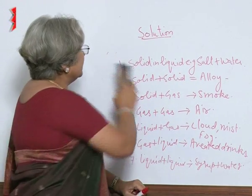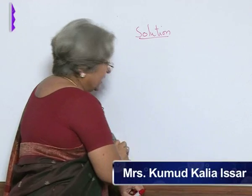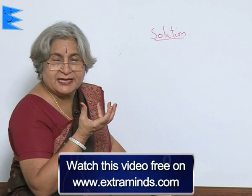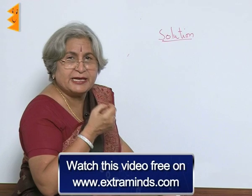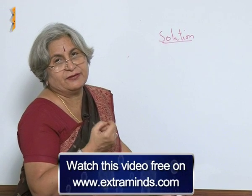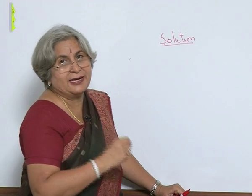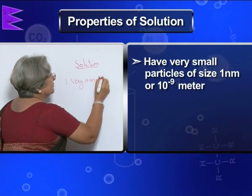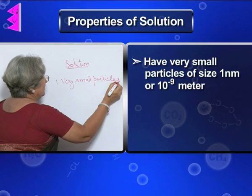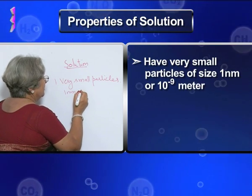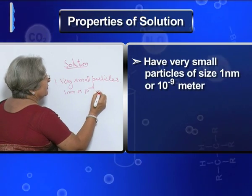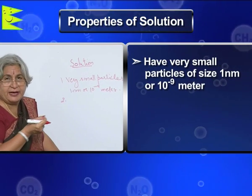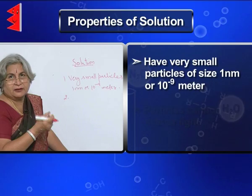These are some examples of a solution. Now, what are the characteristics of a solution? First, why are we not able to see the solute particles? The reason is that they break up into such tiny particles that we cannot see them with the naked eye — they are only 1 nm, that is 10⁻⁹ meters. Because they are so small, even if we put a beam of light on them, they cannot scatter light.